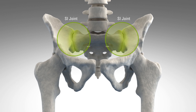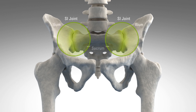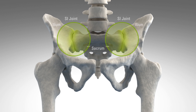The sacroiliac joint is a very broad joint that links the spine to the pelvis. It is in between the sacrum and the ilium, and it transmits force from the legs to the back and the back to the legs.